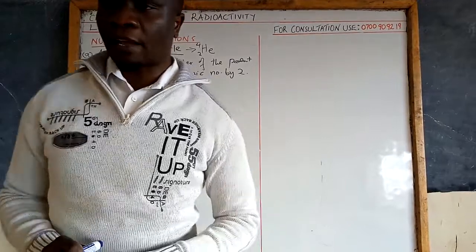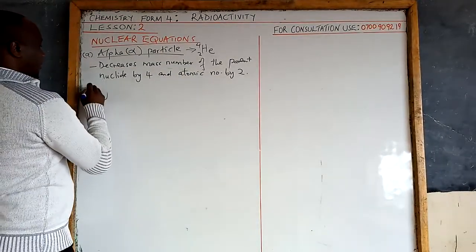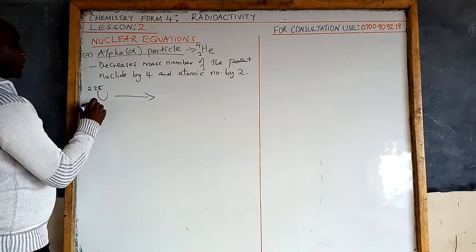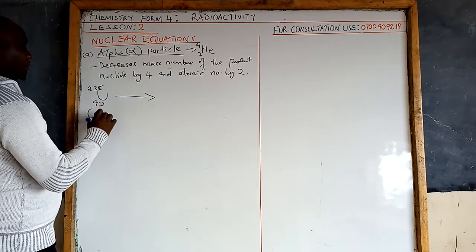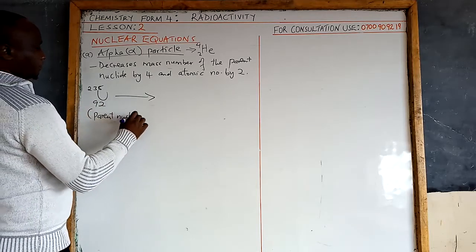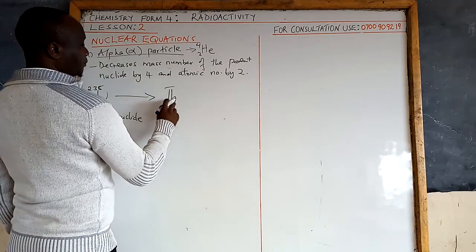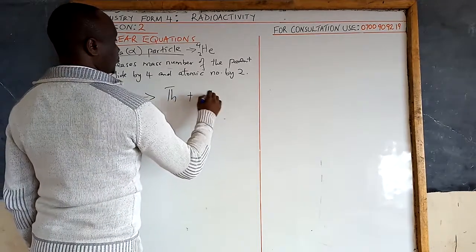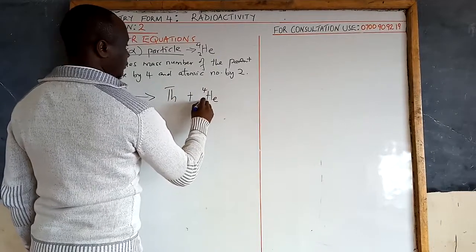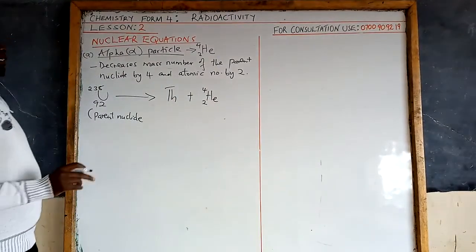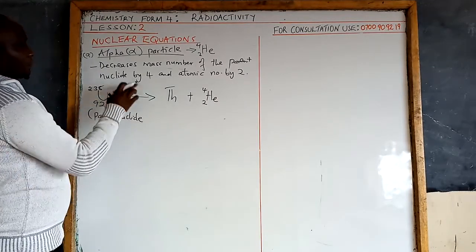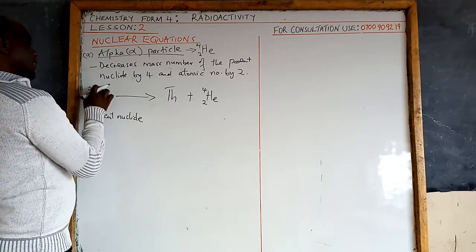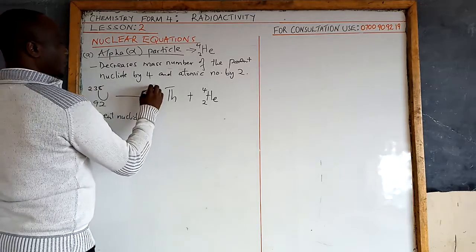For example, uranium-238 forms thorium by emitting an alpha particle. Uranium-238 is the parent nuclide. The mass number decreases by 4: 238 minus 4 gives 234. The atomic number decreases by 2: 92 minus 2 gives 90. So thorium with mass number 234 and atomic number 90 is the daughter nuclide.